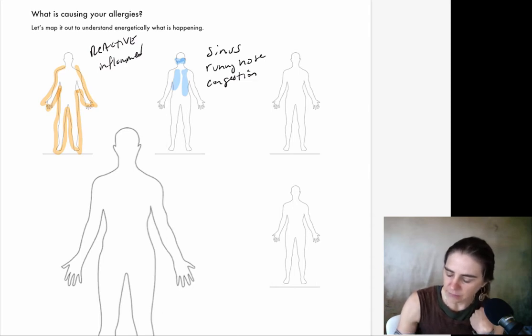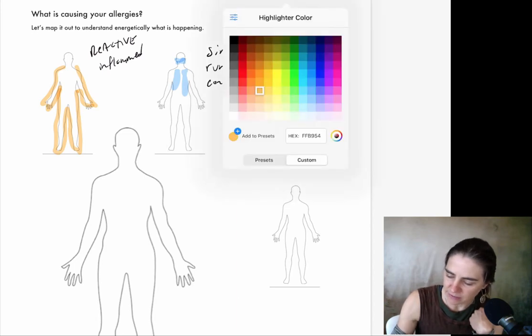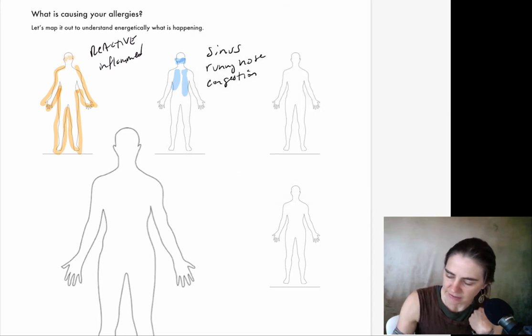With the skin, I forgot—if I go back, itchy eyes would be part of this. I'm just going to make red around the eyes. Itchy eyes is kind of like itchy skin, it's just like your eyeballs are itchy. So I'm going to include that over there.